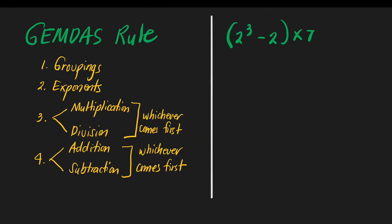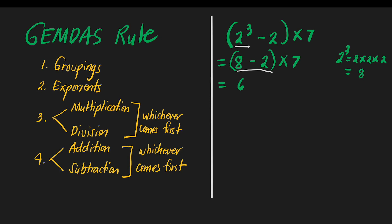We have another one: 2 cubed minus 2, all in grouping, times 7. Which do we do first — groupings or exponents? We choose groupings, and we have an exponent inside the grouping. So we do 2 cubed first. 2 cubed means 2 times 2 times 2: 2 times 2 is 4, 4 times 2 is 8. So 2 cubed equals 8. Then copy 2, copy the parenthesis, times 7. Now do what's inside the parenthesis: 8 minus 2 equals 6. Then copy times 7. 6 times 7 equals 42. That is our answer.